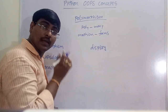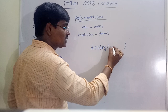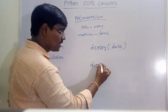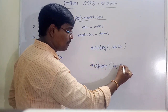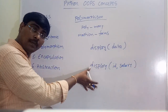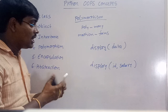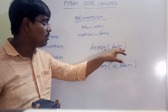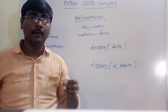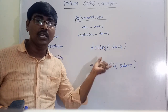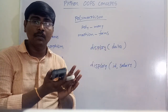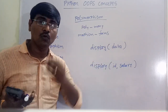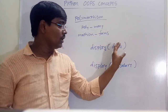For example, consider a method display. Display with one argument shows the data. In another context, display with two parameters like ID and salary behaves in a different way. The name of the method is the same but it behaves differently in different contexts. Also, the plus symbol acts as addition for numbers but as concatenation for strings — that is polymorphism.